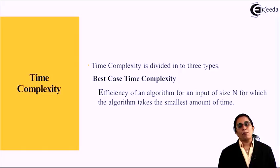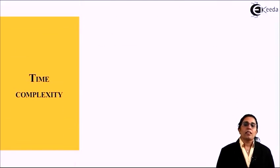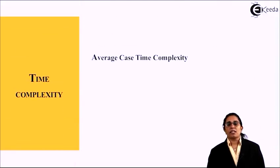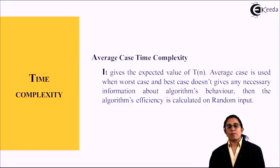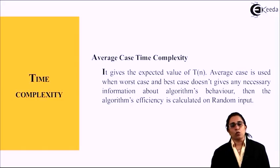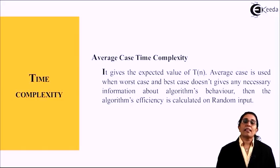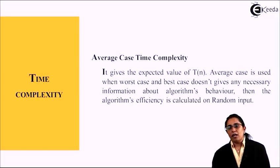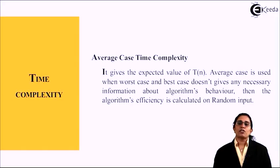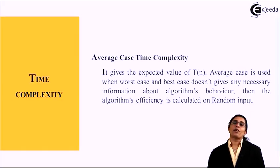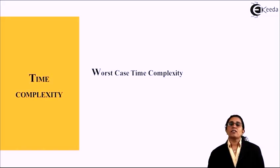The average case time complexity is defined as the expected value of T(n). Average case is used when the worst case and the best case do not give any necessary information about the algorithm behavior. Then the algorithm efficiency is calculated on random input.